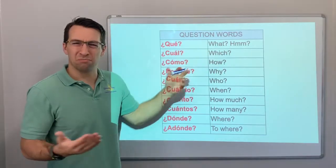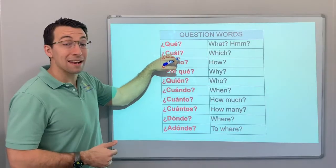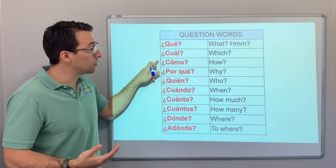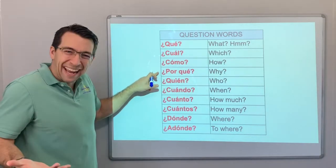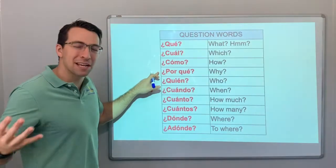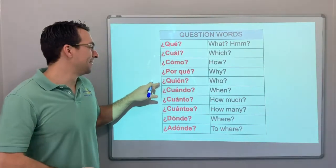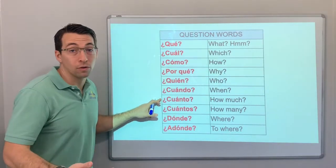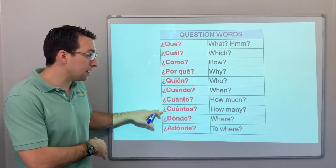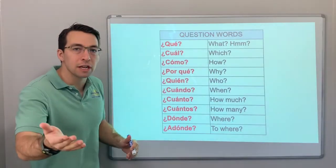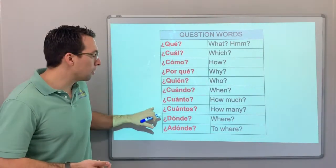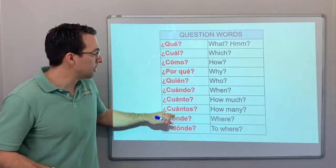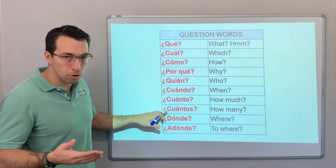¿Qué? — what. ¿Cuál? — which. ¿Cómo? — how. ¿Por qué? — why. Like 'Mami, ¿por qué?' — Mom, why? ¿Quién? — who. ¿Cuándo? — when. ¿Cuánto? or ¿cuántos? — how much or how many. For example, ¿Cuánto dinero tienes tú? — how much money do you have? Or ¿Cuántos perros tienes tú? — how many dogs do you have? That's the singular versus the plural.